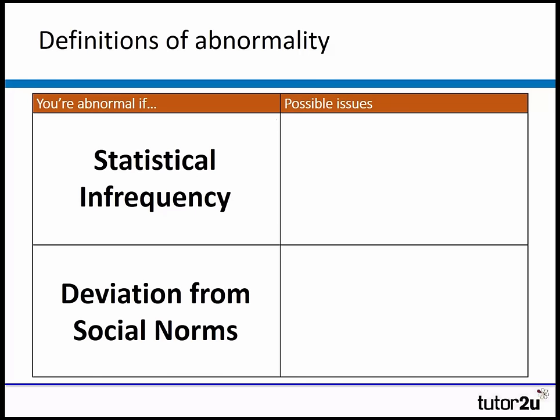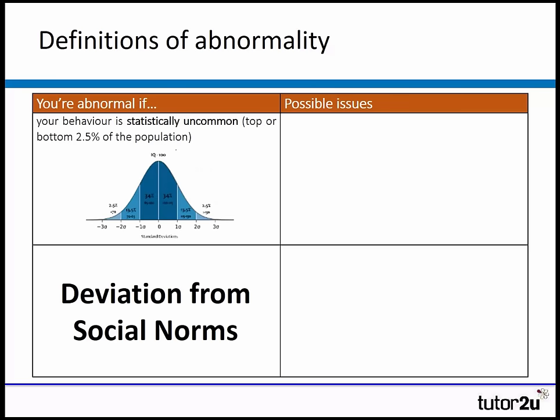Starting with all the definitions of abnormality — what we're looking at is how can we explain someone is abnormal. With statistical infrequency, according to this definition, you're abnormal if your behaviour is statistically uncommon, in the top or bottom 2.5% of the population.